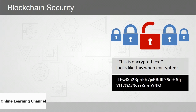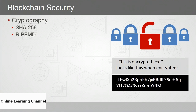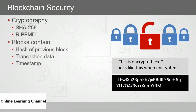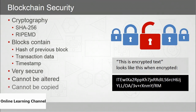Blockchain's security features: it's secured using cryptography, typically either SHA-256 or RIPE-MD. Every block on the blockchain contains a hash of the previous block, transaction data, and a timestamp. The blockchain cannot be altered, cannot be copied, and provides non-repudiation — meaning parties can't deny that they did a thing.